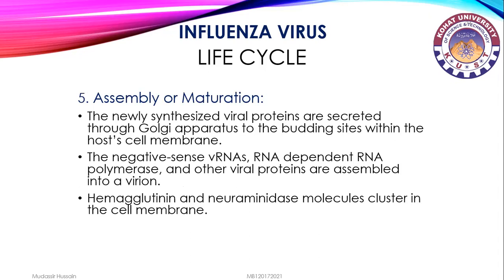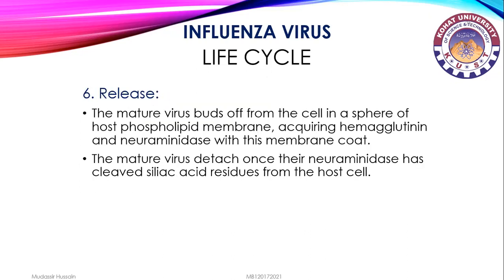The fifth step is assembly or maturation: the newly synthesized viral proteins are secreted through the Golgi apparatus to the budding sites within the host cell membrane. The negative-sense viral RNA, RNA-dependent RNA polymerase, and other viral proteins are assembled into a new virion. Hemagglutinin and neuraminidase molecules cluster in the cell membrane. The last step is release: the mature virus buds off from the cell in a sphere of host phospholipid membrane, acquiring hemagglutinin and neuraminidase with this membrane coat.